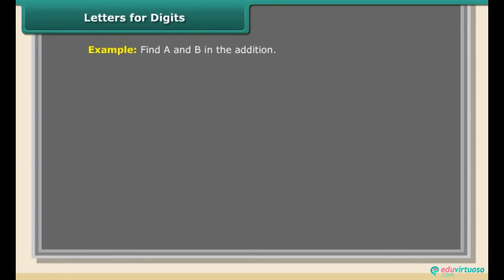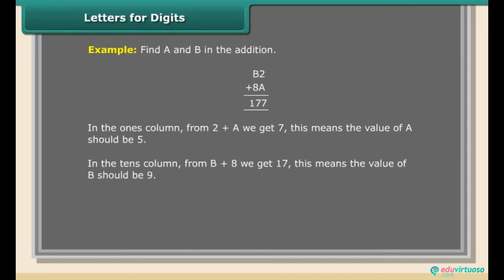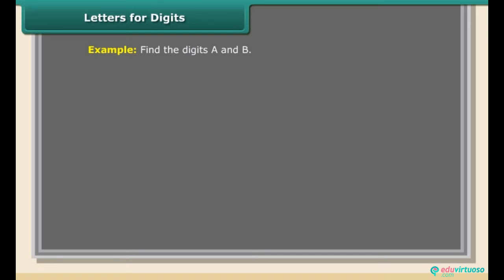Example: Find A and B in the addition B2 + 8A = 177. In the ones column, 2 + A = 7, so A = 5. In the tens column, B + 8 = 17, so B = 9. Check: 92 + 85 = 177.